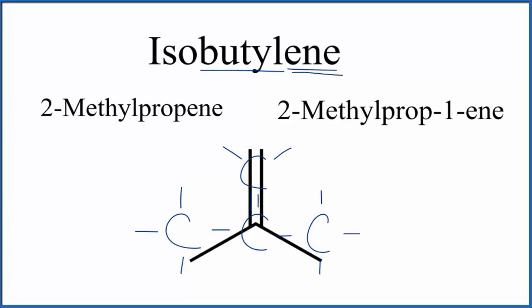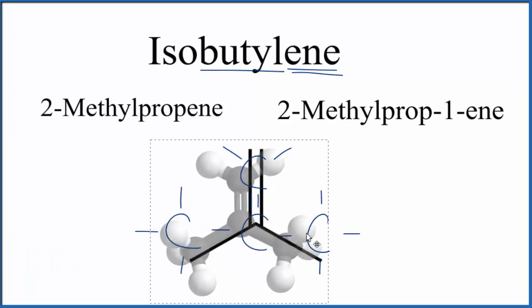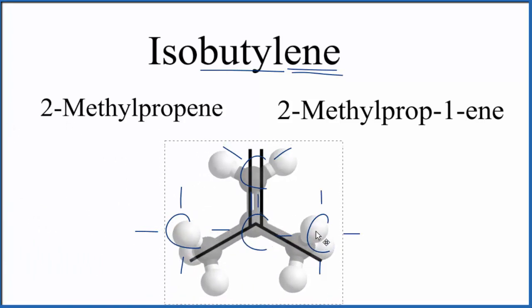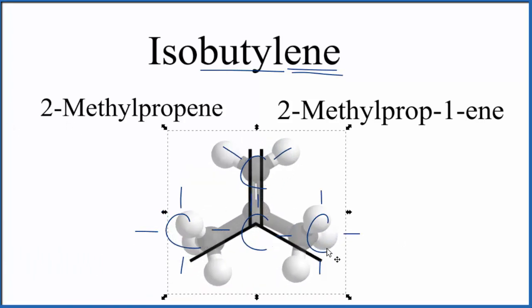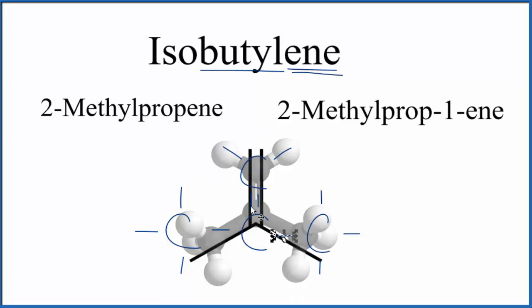Or you could look at the 3D model for isobutylene, which looks like this. You can see this carbon here has two hydrogens. The carbons on the end have three, and the one in the middle has four bonds and doesn't have any additional hydrogens. So that's the formula for isobutylene.